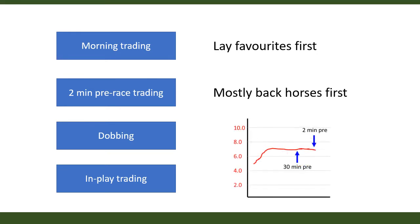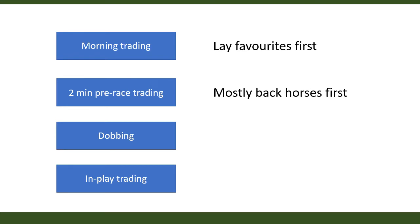My thinking with these trades is that the form is good, so I expect money to come for the horse at some point. If money hasn't come by two minutes pre-race, it's likely to come after this point. There are two aspects: selecting your horse, which can be easily learned, and getting your timing right, which is more about experimenting and tweaking. When trading outsiders there was often a liquidity problem, so I started looking at dobbing these horses.